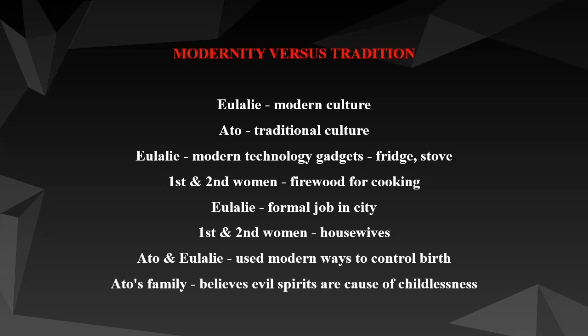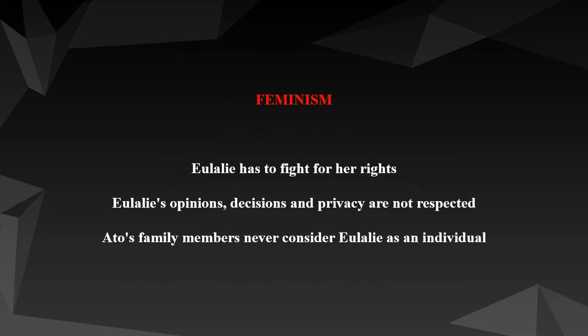The next theme is modernity versus tradition. In this drama, the culture of Eulalie is a modern one, while Ato's culture is traditional. Eulalie uses modern technology gadgets and machines such as fridges and stoves in their home, while the characters First Woman and Second Woman use firewood when cooking. Eulalie also does a formal job in the city, unlike First Woman and Second Woman who are mainly housewives. The couple used modern ways to control birth, but the focus of Ato's traditional beliefs is that evil spirits are a cause of childlessness.